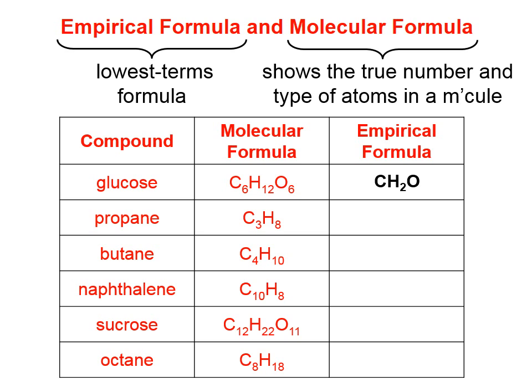Each of these subscripts can be divided evenly by 6 to give us a 1 to 1 ratio. It turns out that for propane, the empirical and molecular formulas are the same, because there's no way to reduce C3H8 to some lower whole number ratio.